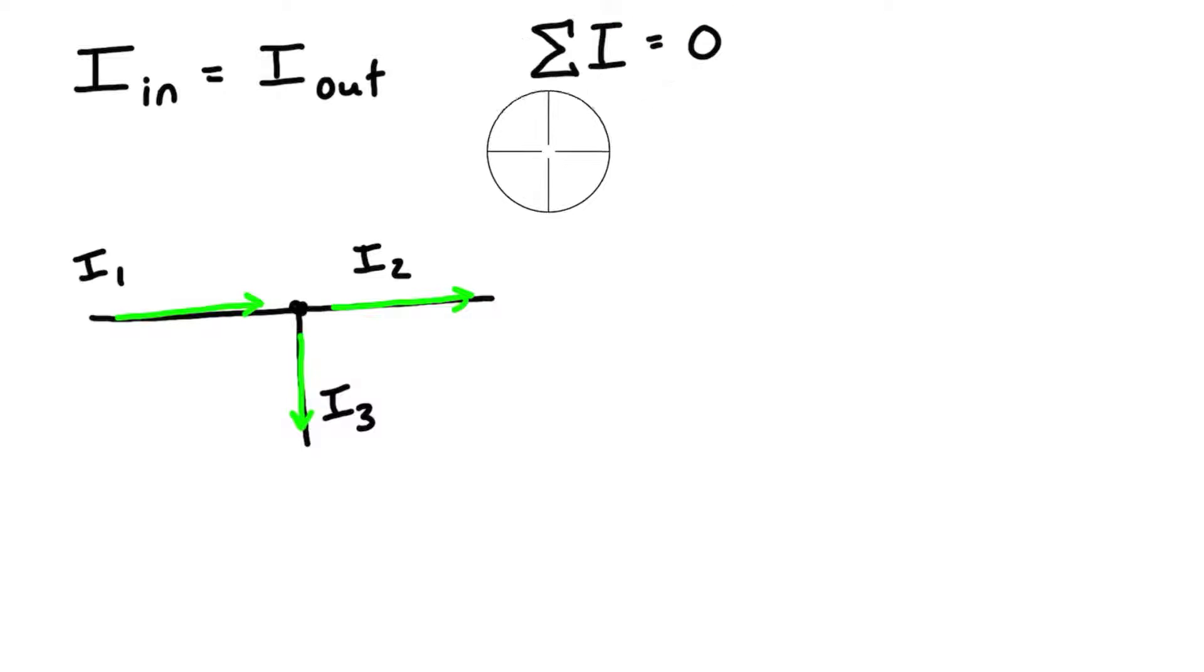In order to get our expression, we pick a direction to be positive and another to be negative. Let's pick the current flowing out to be positive. Then we can write our expression summing to zero: i3 plus i2 (both positive because they flow out), and i1 flows in so we give it a negative value. We have i3 + i2 - i1 = 0.